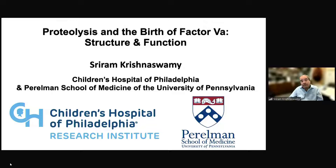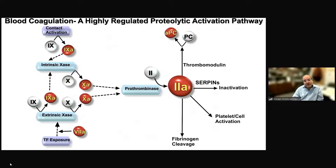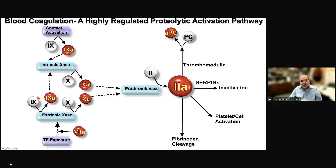Today I'm going to talk about some structure-function studies we're doing with Factor 5 and 5A. To set the stage — and I feel silly about talking about this at an Earl Davies symposium — coagulation is an inert system in blood and is activated on demand by vascular damage that exposes tissue factor. This triggers a series of very discrete proteolytic activation events, in each case converting an inactive precursor to an active protease, a zymogen to a protease, and all of this culminates in the formation of thrombin.